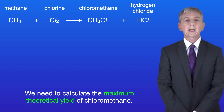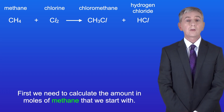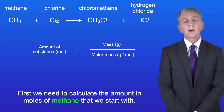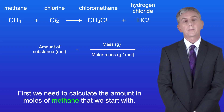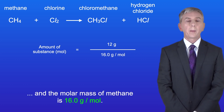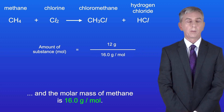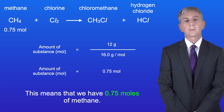We need to calculate the maximum theoretical yield of chloromethane, so first we need to calculate the amount in moles of methane that we start with. The amount of substance in moles equals the mass in grams divided by the molar mass in grams per mole. We've got 12 grams of methane and the molar mass of methane is 16.0 grams per mole. This means that we've got 0.75 moles of methane.